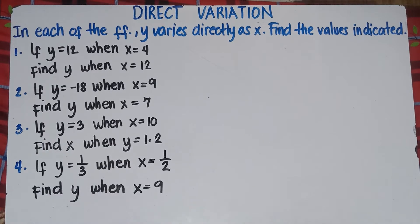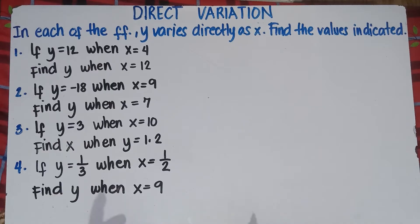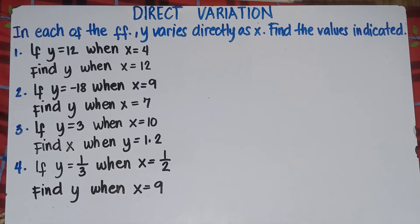So in each of the following, y varies directly as x, find the values indicated. So example number one, class: if y equals 12 when x equals 4, find y when x equals 12.